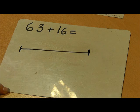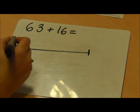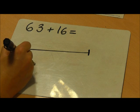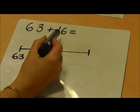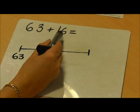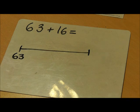Again, the first number in my number sentence is 63. I therefore write that at the start of my empty number line. I'm then going to partition the second number into tens and units.